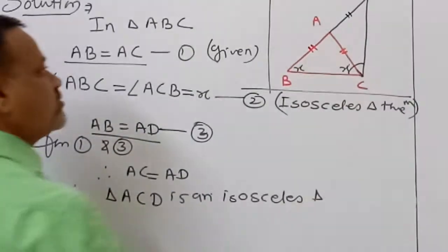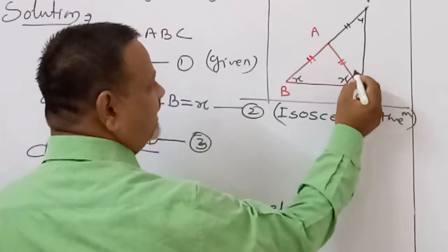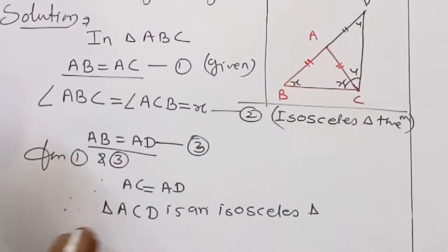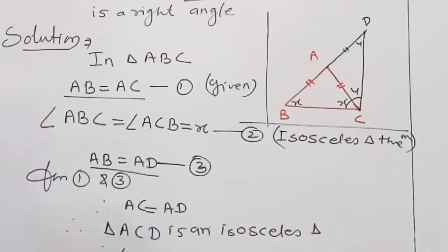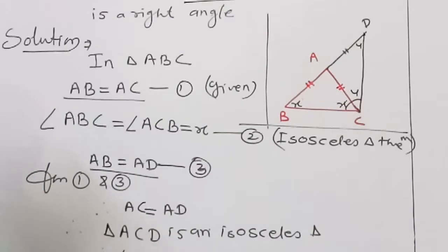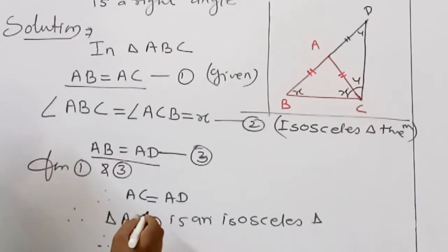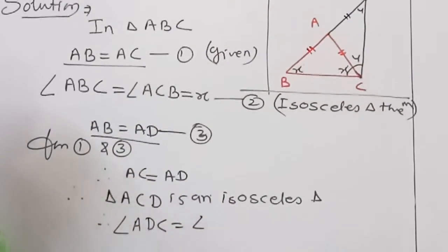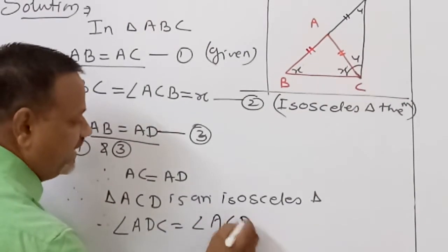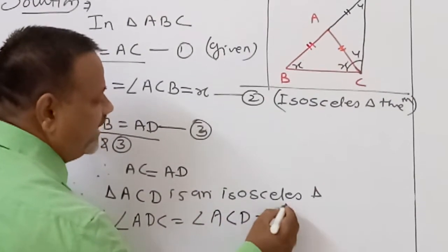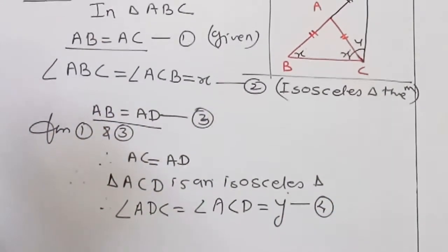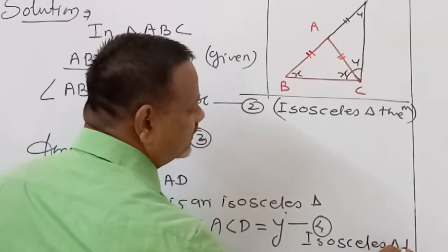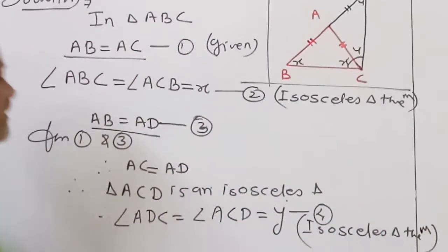Since triangle ACD is isosceles with AC equal to AD, it means the angles opposite to these equal sides are equal. The angle opposite to AD is angle C, and the angle opposite to AC is angle D. Therefore angle ADC equals angle ACD. We call this y. This is equation number 4, by the isosceles triangle theorem.